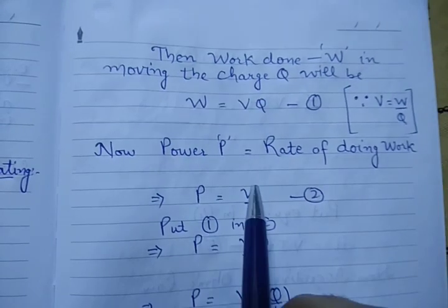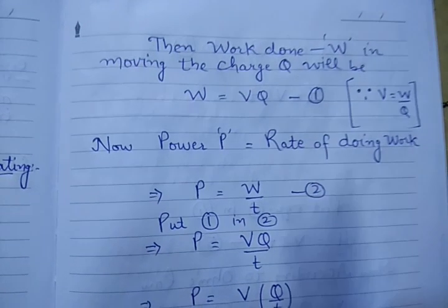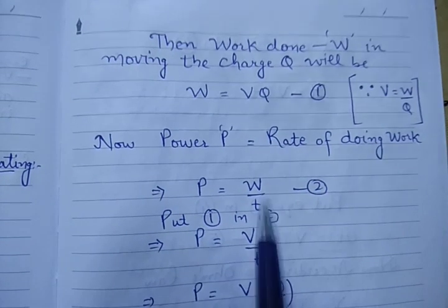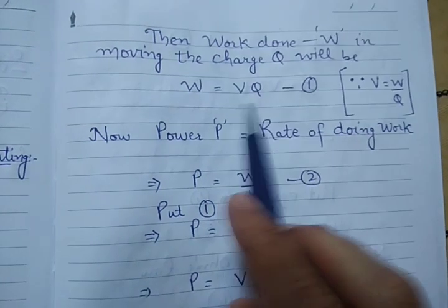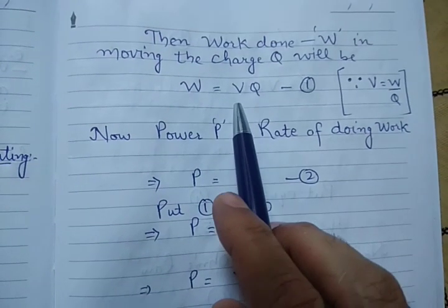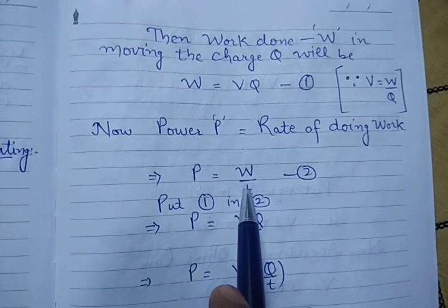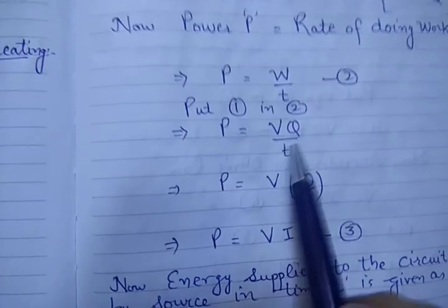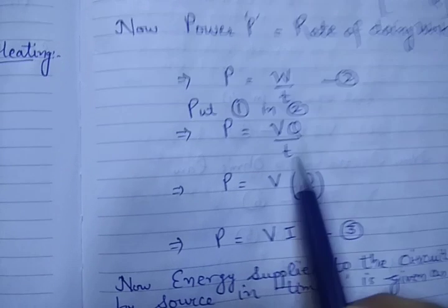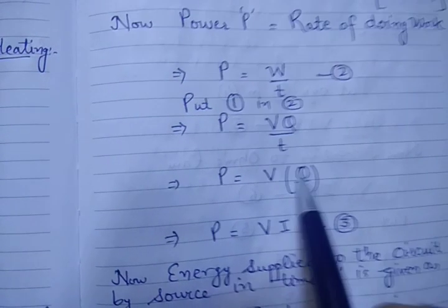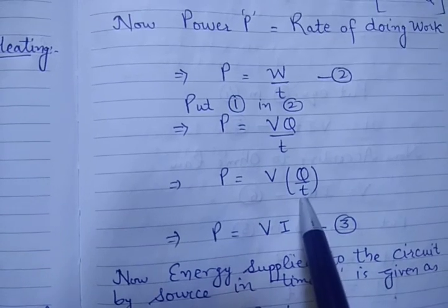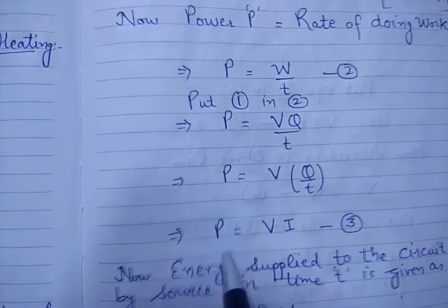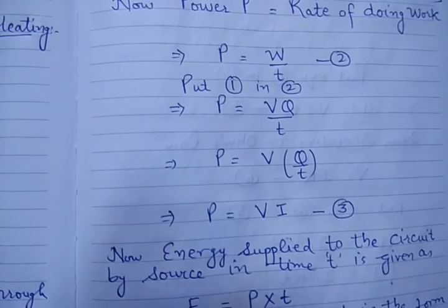Now as we know, power is rate of doing work. So power will be work done per unit time. That would be equation number 2. Now put W equals VQ into this equation. You will get P equals VQ by T. Now we know that Q by T, that is charge per unit time or rate of flow of charge, is known as current. So P equals VI. This is equation number 3.